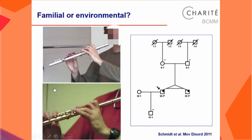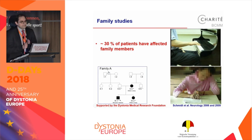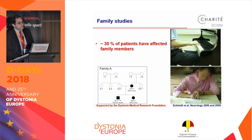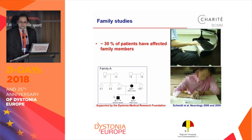This is a family where we suspected a genetic contribution. To elucidate whether there is indeed a genetic contribution to musicians' dystonia, we performed large family studies over the past years across Germany and Europe. Interestingly, in about 30% of patients we found affected family members with different types of dystonia — both musicians' dystonia and other types. The index patient in one typical family is a professional pianist with a severe flexion dystonia of the right hand.